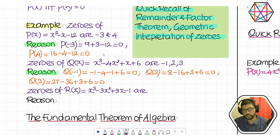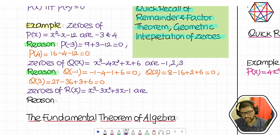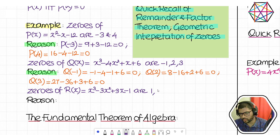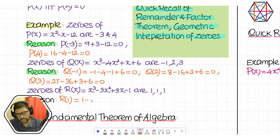One more example — zeros of r(x). P, Q, R, or even small letters are just the names of polynomials, and whatever you see within the bracket denotes the variable. Zeros of r(x) = x³ − 3x² + 3x − 1. The zeros are: 1 alone is a zero — 1 alone is the zero, there is no other zero. What is r(1)? 1³ − 3 + 3 − 1: they all cancel and give you 0.